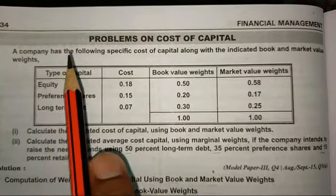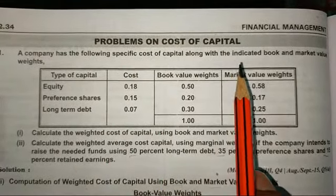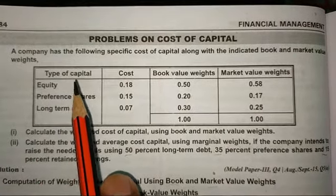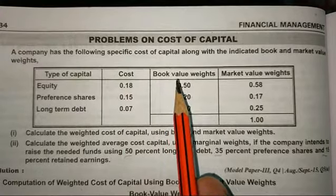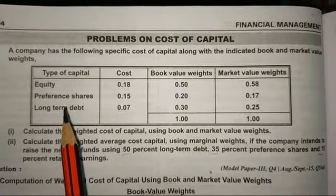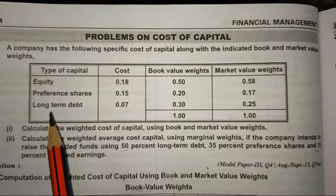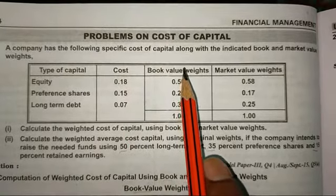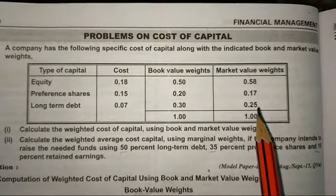A company has the following specific cost of capital along with the indicated book and market value weights. The types of capital are equity, preference share, and long term debts. Their cost, book value weights, and market value weights are as mentioned in the problem.